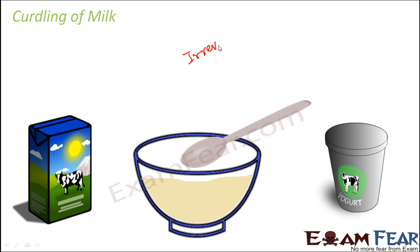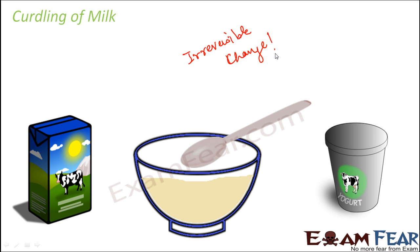Because of these chemical reactions taking place inside, the milk got converted to curd. It is not possible to convert curd back into milk. So curdling is an example of an irreversible change.